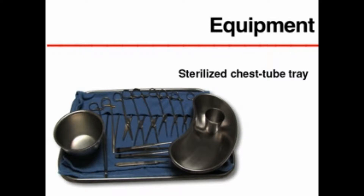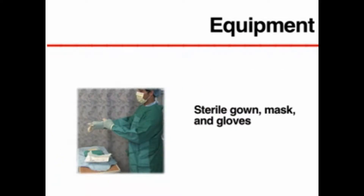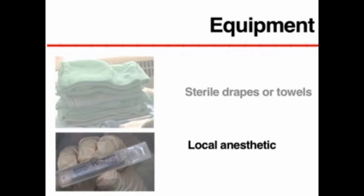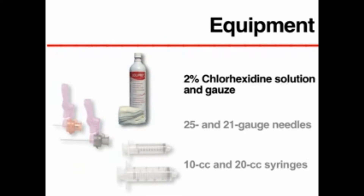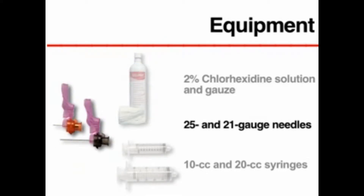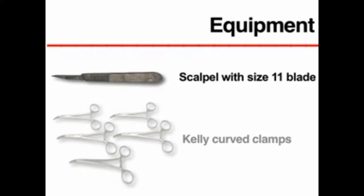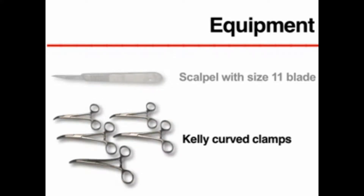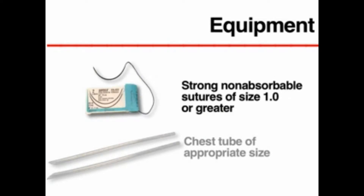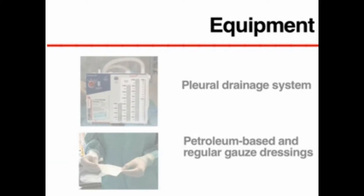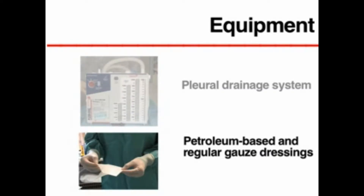The key materials required in addition to the chest tube tray are a sterile gown, mask, and gloves; sterile drapes or towels; local anesthetics such as 1% lidocaine; chlorhexidine cleaning solution and sterile gauze; 25 and 21 gauge needles; 10 cc and 20 cc syringes; a scalpel with size 11 blade; at least 4 or 5 dissecting instruments such as Kelly curved clamps or artery forceps; non-absorbable strong sutures of size 1.0 or greater made of silk or nylon; a chest tube of appropriate size; a sterile drainage system; and dressings for the tube after insertion.